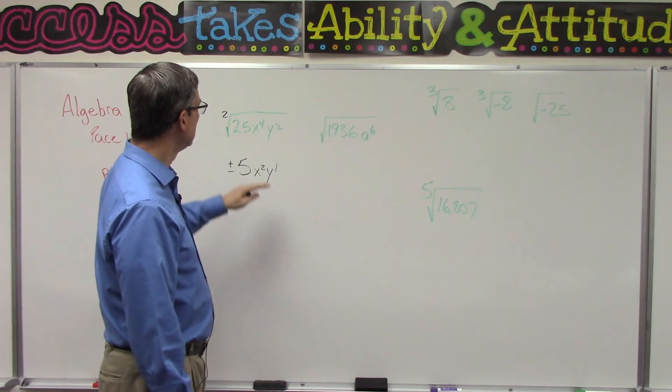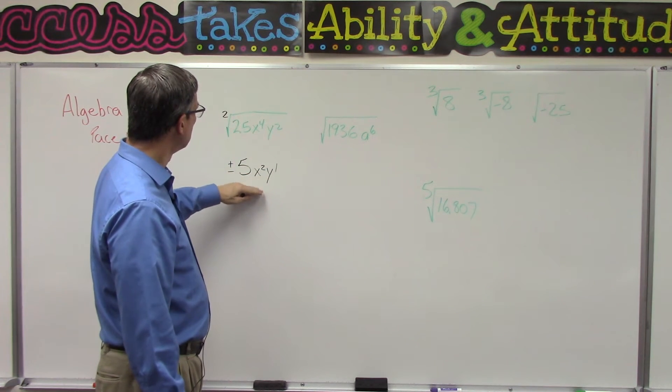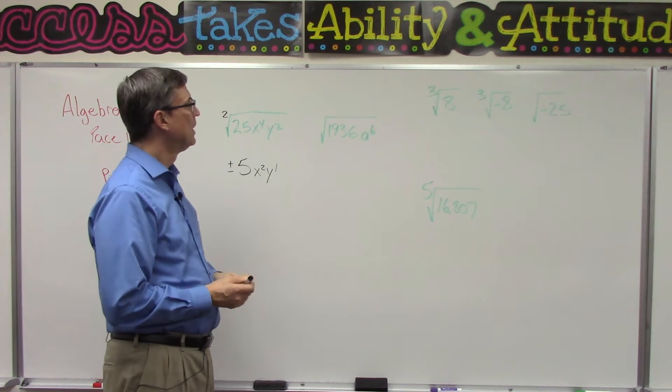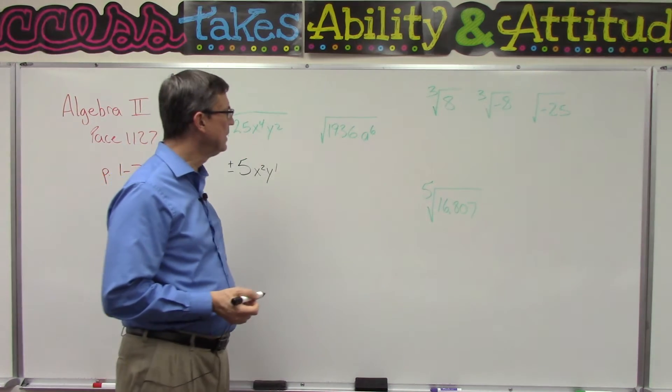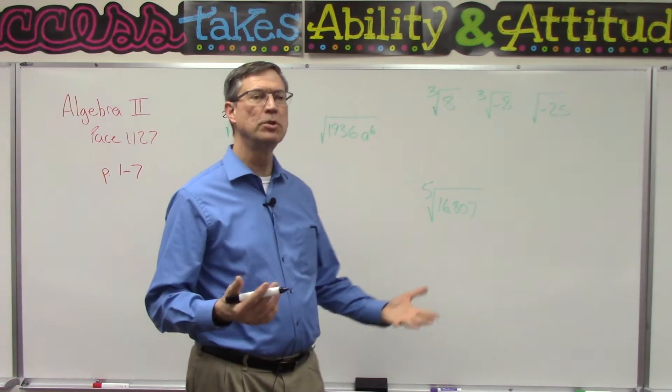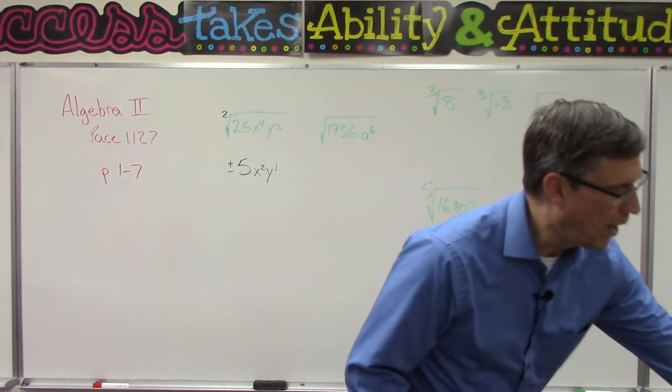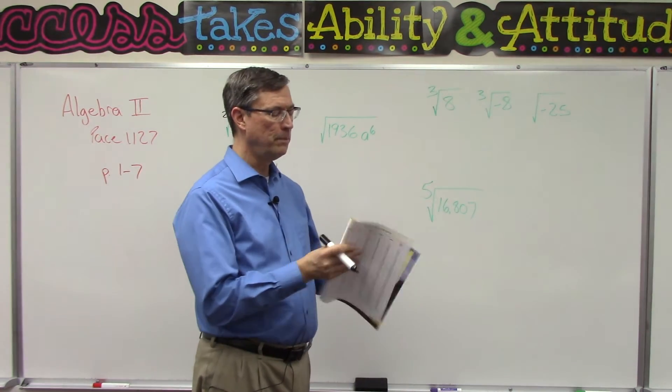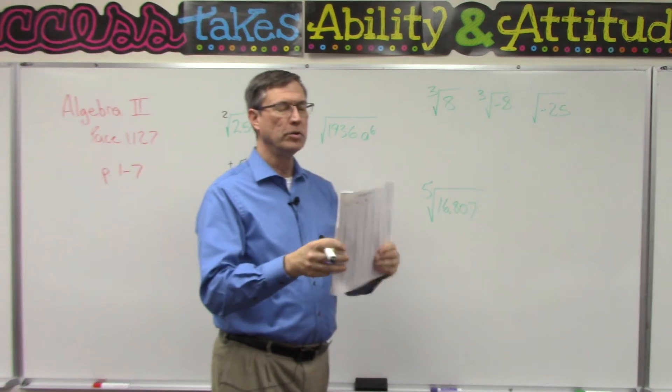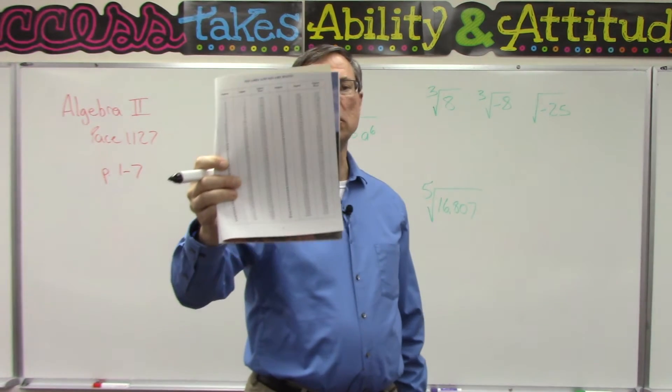Okay, so this would be the square root of that. Now I just made that one up. I also just made this one up. Look at that huge number, 1936. You say, 'How am I supposed to know that, Mr. Anger?' In the back of your pace, on page 33, you'll see a chart.